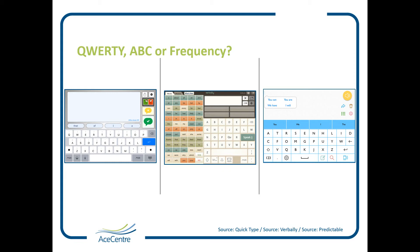Frequency Layout is shown on the right here. This is when the most frequently used letters of the alphabet are clustered together. This is unlikely to be the best layout if you're going to be using your hands to type, because it is more commonly used with an alternative access method. We've included it here because it's something you're likely to come across when looking at different resources.